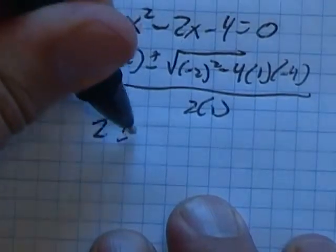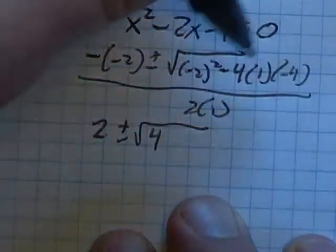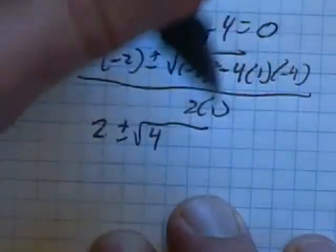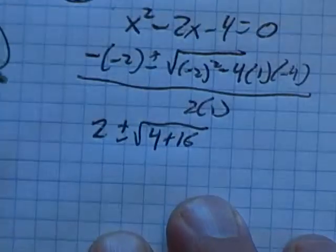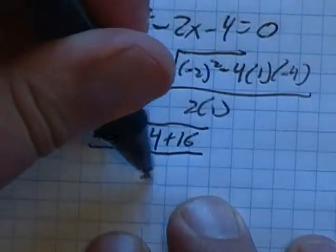Negative negative 2 is 2. 2 squared is 4. 4 plus 16. And that is all over 2.